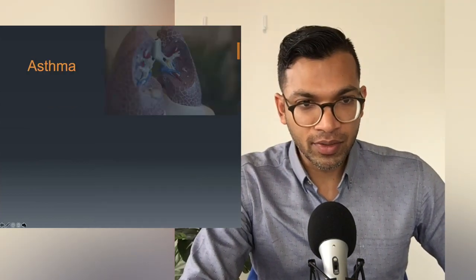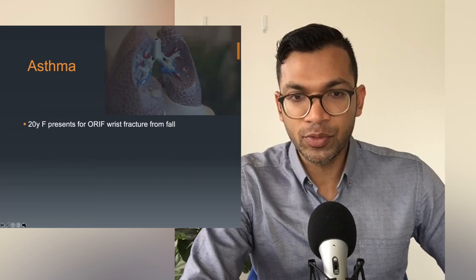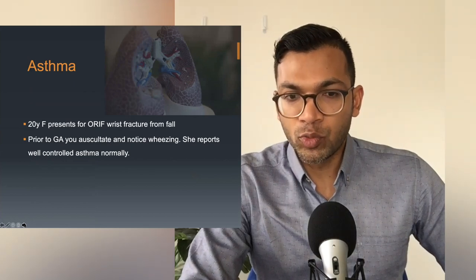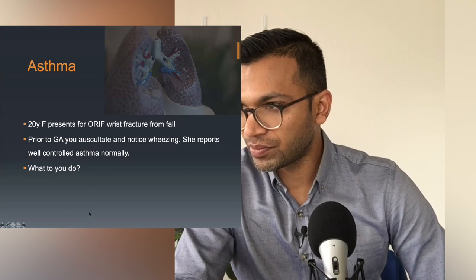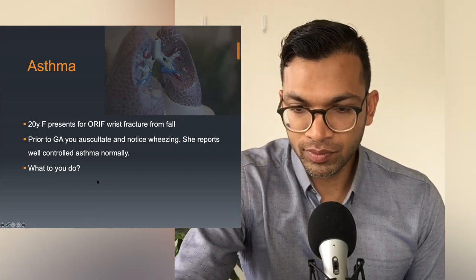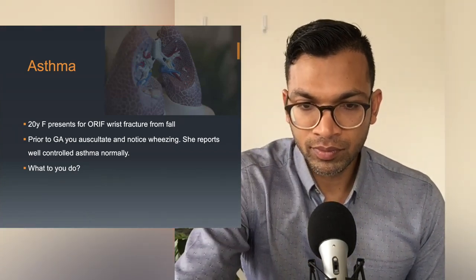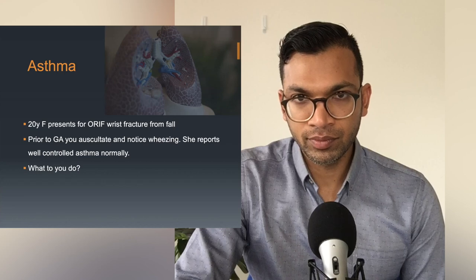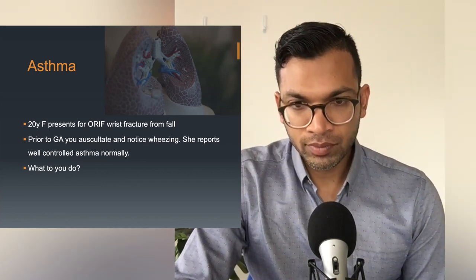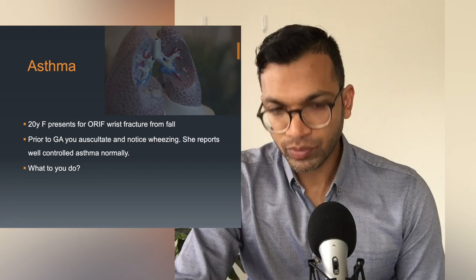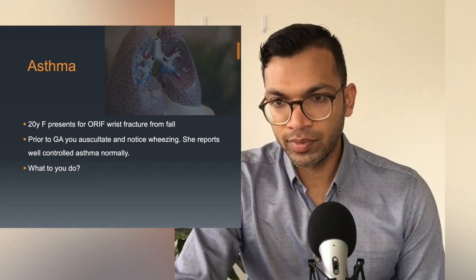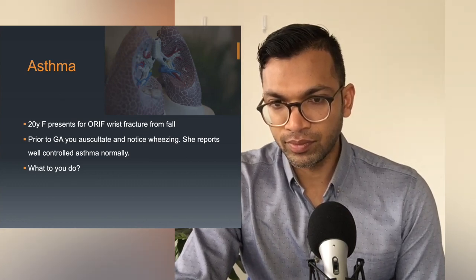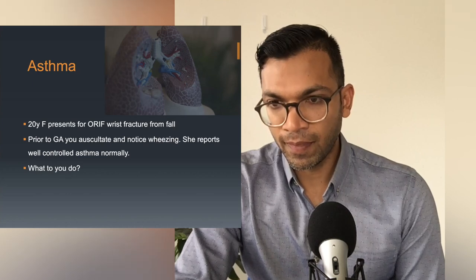Next case — asthma. A 20-year-old female presents with a right wrist fracture from a fall. Prior to general anesthetic, you auscultate and notice wheezing. She reports normally well-controlled asthma. A wrist fracture is probably emergent or semi-urgent. If non-emergent and there's time, consider lung function tests. If we need to proceed, rule out an infective process, check what asthma medications she's on, and optimize them — whether that's her preventer or short-acting bronchodilators.